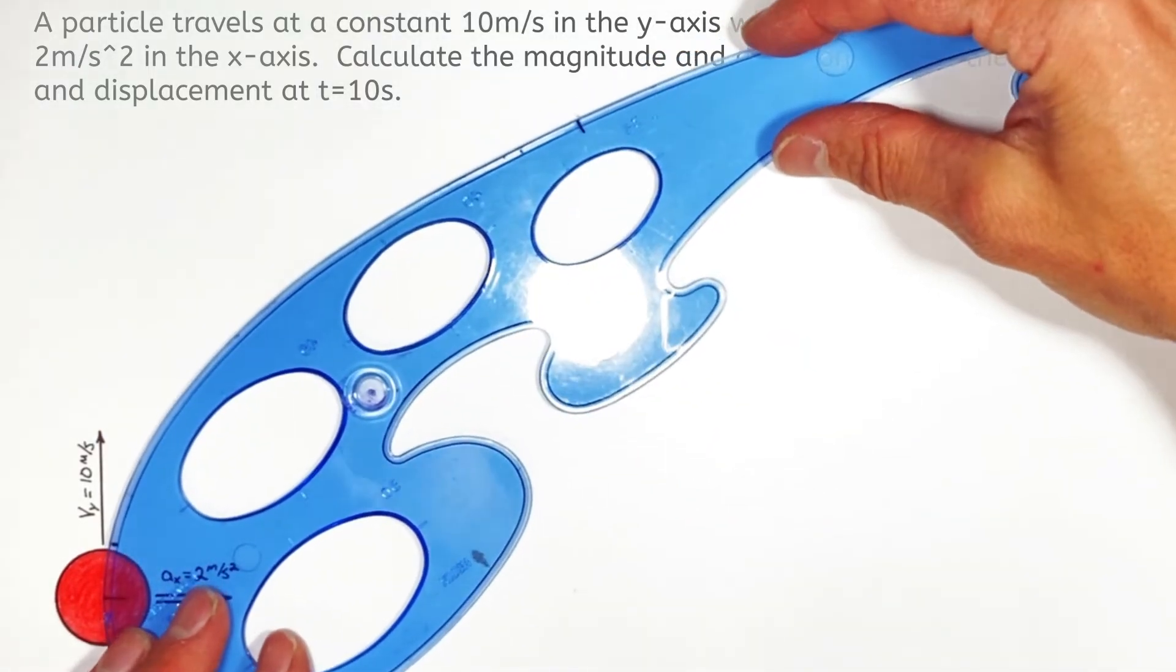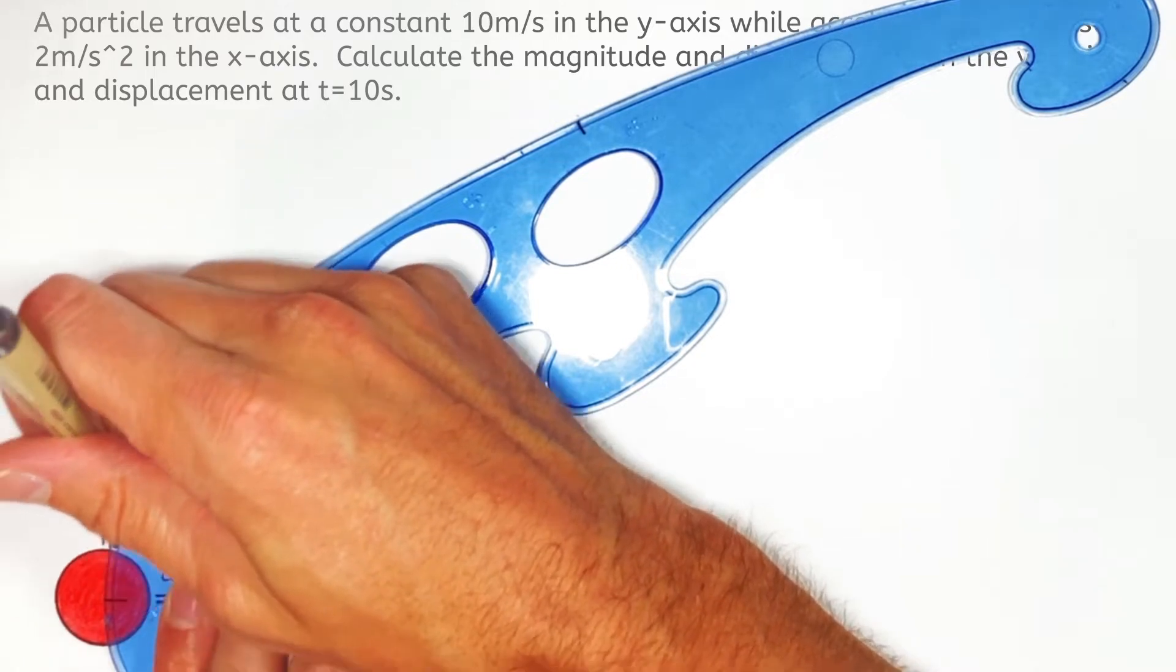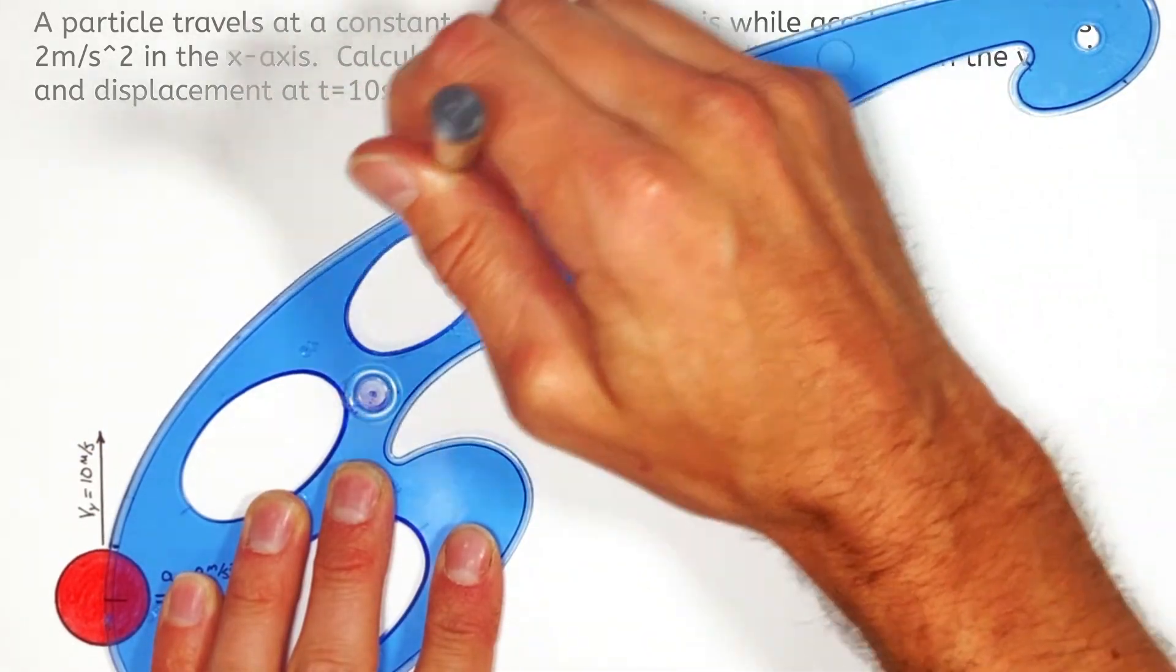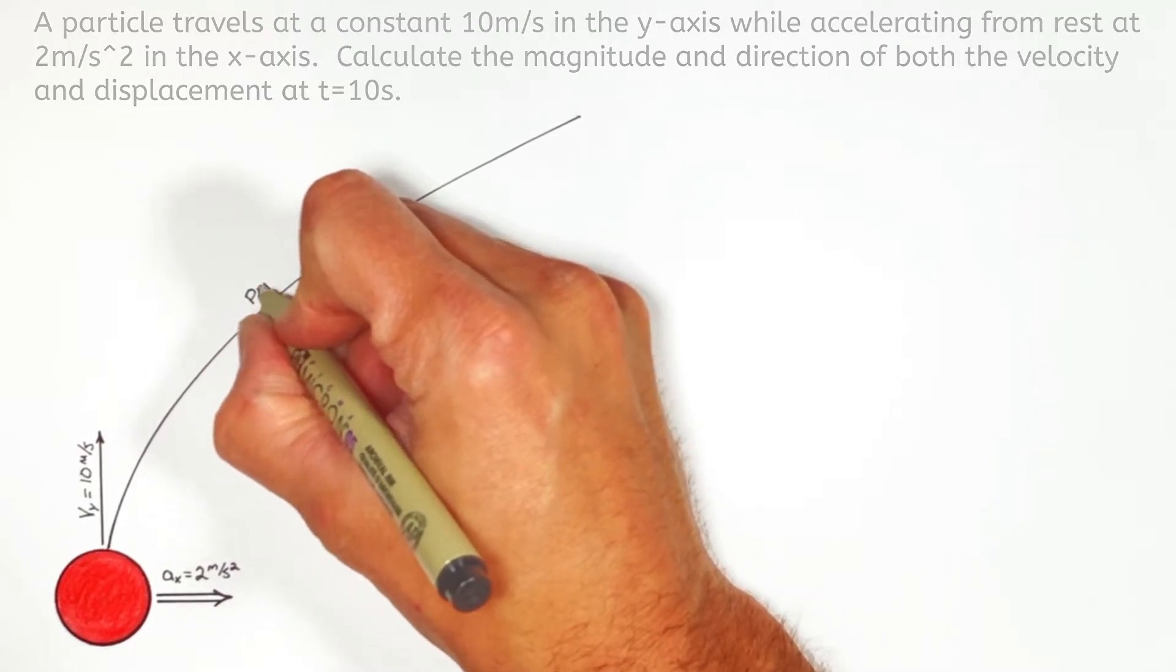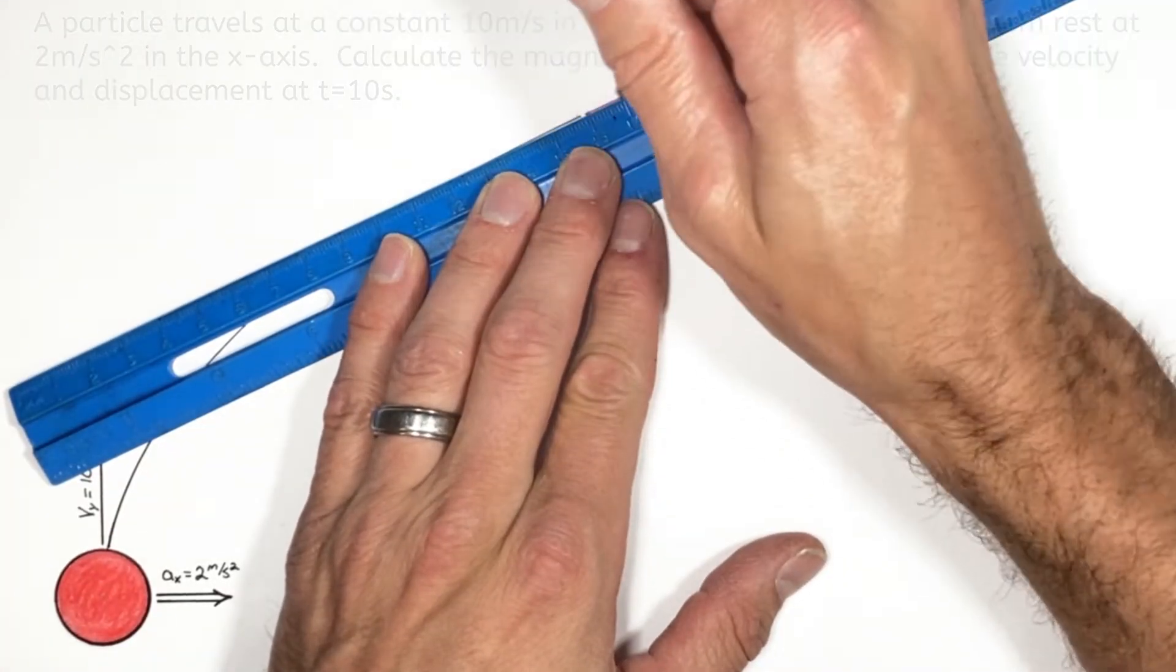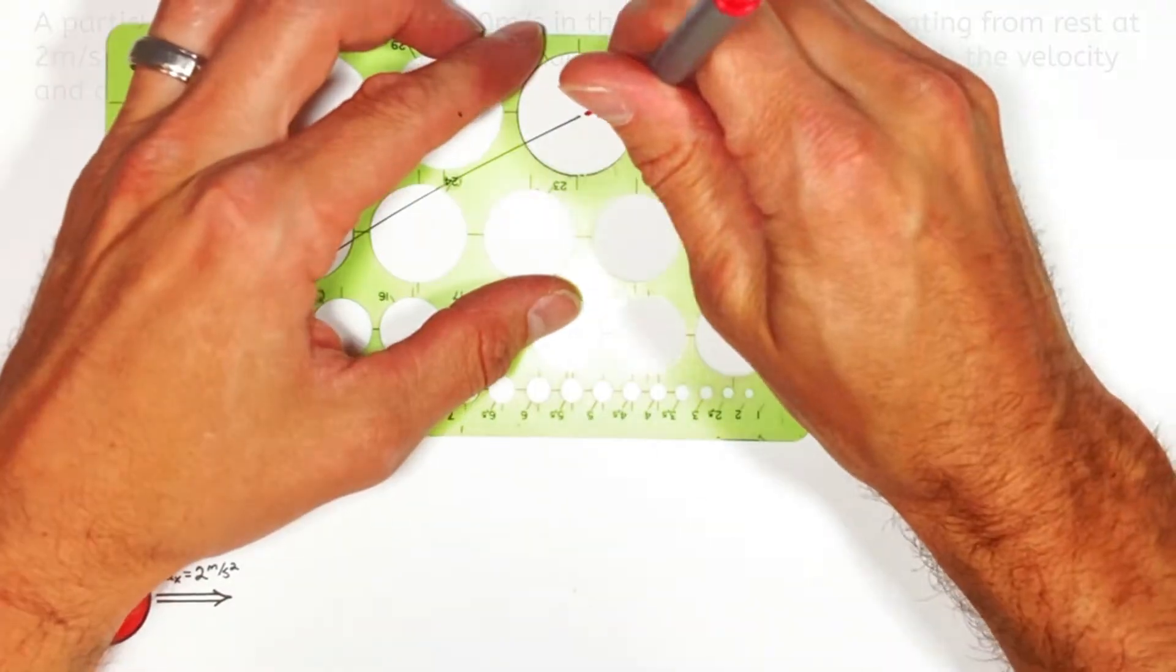Now because the ball is moving at a constant speed in one axis and accelerating in the other, we're gonna see the ball move along in a curved path kind of like what you'd see in projectile motion except in this case the acceleration is sideways. So we're gonna solve for both the speed and direction of the ball after some amount of time. Let's say after 10 seconds.